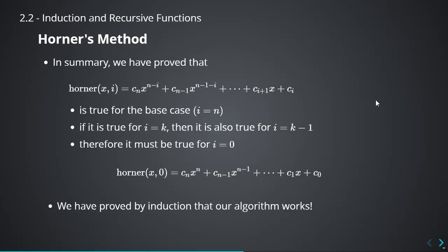In summary: we have a statement to prove, with the goal of showing it's true for i equal to 0. We show the statement is true for the base case i equal to n. We also argue that if it's true for i equal to k, then it's also true for i equal to k minus 1. So it must be true for i equal to 0 — it's true for 5, true for 4, true for 3, and so on until we get to 0. We've shown by induction that our algorithm works and does compute f(x), because Horner(x, 0) gives you the whole polynomial from the formula.